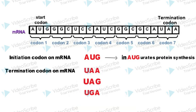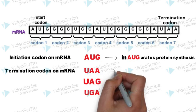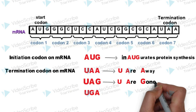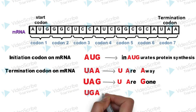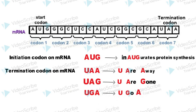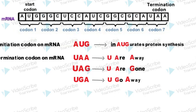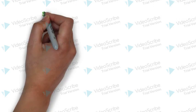To remember the three termination codons, just remember: 'You Are Away' for UAA, 'You Are Gone' for UAG, and 'You Go Away' for UGA. These three statements will help you remember all three stop codons.